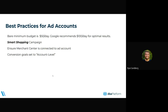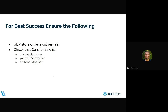Conversion goals should be set to account level as well. For best success, this is an important one — the Google Business page store code must remain the same. It's located in the info section of your Google Business Profile. That is Google linking the feed to your Google Business Profile, so we really want to make sure that doesn't change. Don't have you or the dealers change it. If that does happen, the feed will go down for a minimum of three to five days. If you don't have a store code, we will input a six-digit numerical number — if you see that pop up, don't be alarmed; just tell the client to leave it be. We also want to make sure that Cars for Sale stays live through DBA, is accurately set up, with you as the provider and DBA as the host.